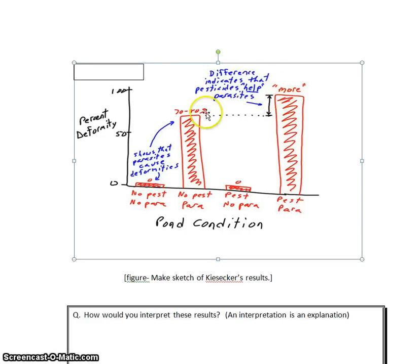In other words, it's higher than the bar over here, indicating that the combination of pesticides and parasites causes more deformity than just the parasites alone.